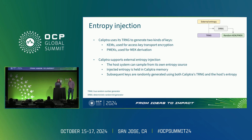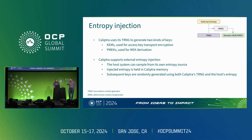We also support entropy injection. Calyptra and the controller occasionally generate random numbers — generating KEM key pairs, generating random PMEKs, and anything else the controller firmware might want to do. We want to provide a service where, as a host environment or platform operator, you can say: here's some random numbers. You might want to contribute entropy just in case there was something wrong with the implementation. So we're introducing a stir-random API — here's some entropy so that in the future, if we need to make a random number, it's extra random.